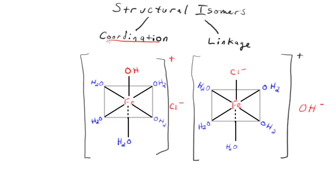So in coordination isomers, the difference is structural. We don't have cis trans. We don't have mirror images. The structure has been altered of our complex ions.